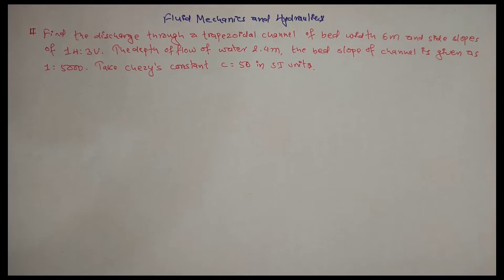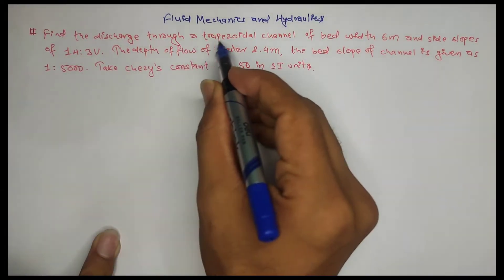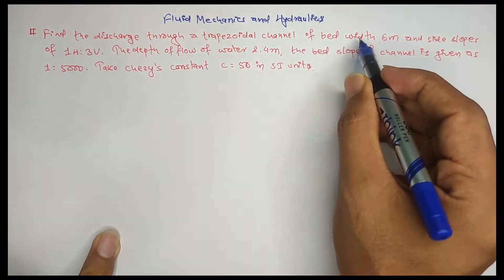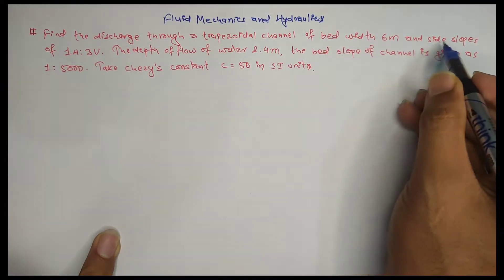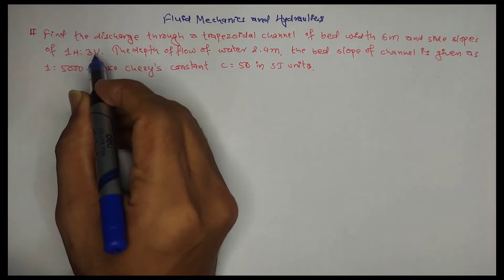Welcome to Engineering YouTube channel. Today we will discuss the fluid mechanics or hydraulic subject of open channel flow. Find the discharge through a trapezoidal channel of bed width 6 meters and side slope of 1 horizontal to 3 vertical.